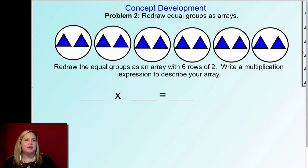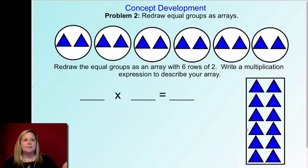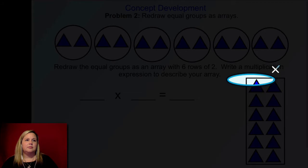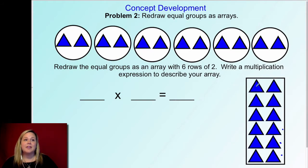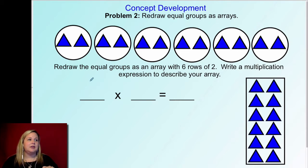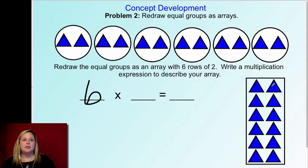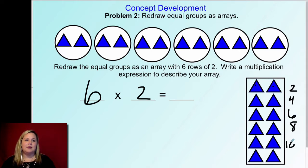All right friends, let me show you what my array looks like. Here it is — I have six rows: one, two, three, four, five, and six. There are two in each row: one, two. Now for the multiplication expression — the first number is how many groups or rows: six. The second number is how many are in each group: two. You could skip count by twos: two, four, six, eight, ten, twelve. So six times two gives you the product of twelve.